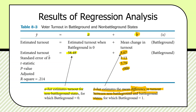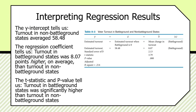To interpret: the y-intercept tells us turnout in non-battleground states averaged about 58.48. The regression coefficient tells us turnout in battleground states was 8.07 points higher on average than in non-battleground states. Dummy variable regression is just another way of doing mean comparison analysis and looking for statistically significant differences. The t-statistic's p-value tells us turnout in battleground states was significantly higher.